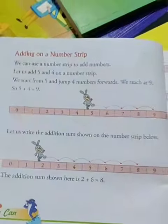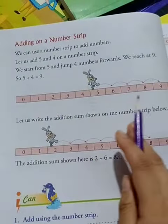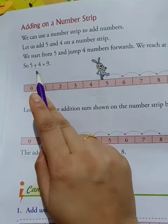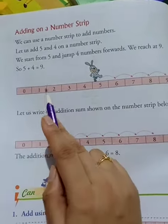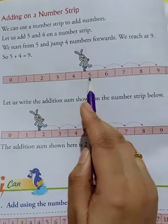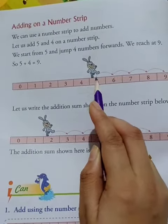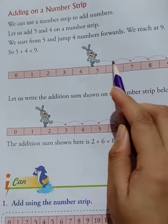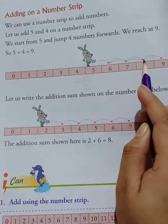So five plus four equals nine. Here we have to add five and four. We start at five on the number strip. We jump one, two, three, four forward, and the answer is nine.